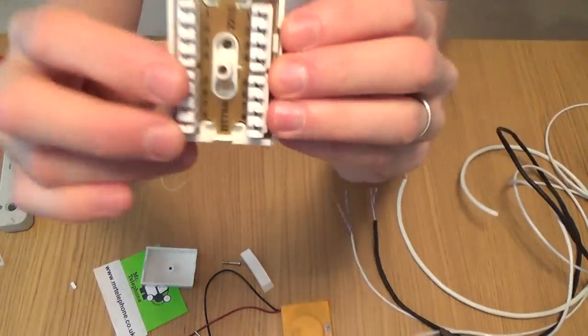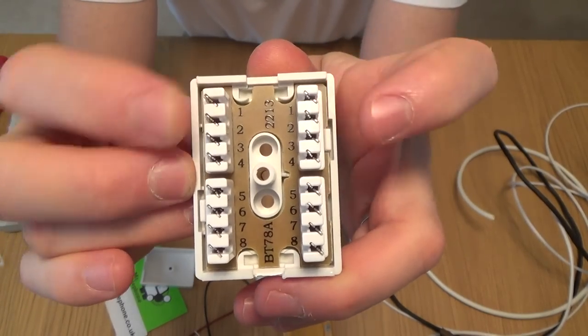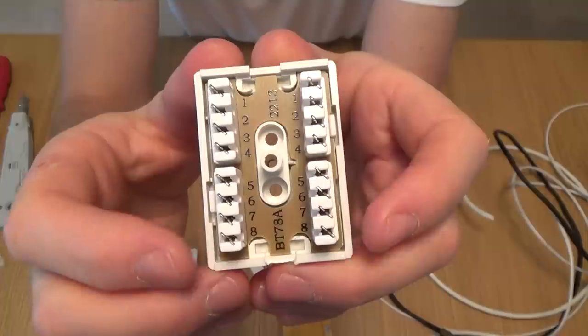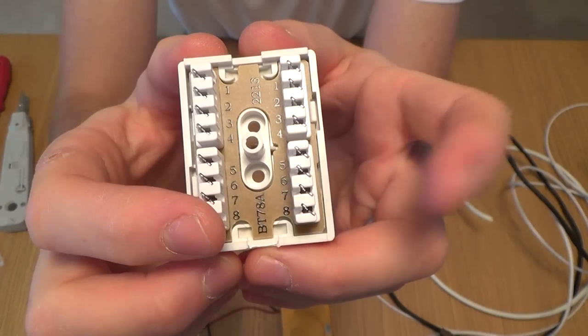Now if you have a look, you've got terminals one to eight down this side and one to eight down this side. One corresponds to one here, two to two, three to three, all the way down to eight to eight. So whatever you connect to eight here will become live on eight here.